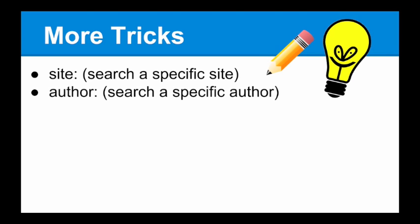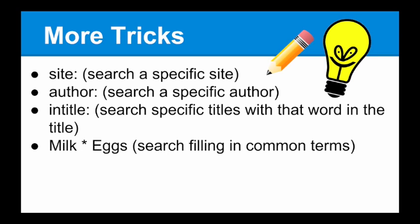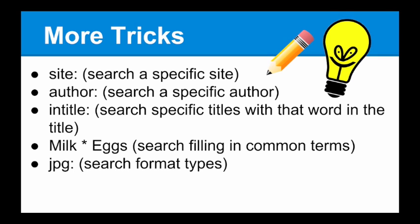A few more tricks: 'site:' searches within a specific website. 'author:' lets you search for a specific author — for example, putting 'author:John Green' finds content written by him. 'intitle:' finds documents with a specific word in the title. The asterisk can mean a wildcard between two things, or find common related terms before a word. You can also search for specific file formats: JPEG and PNG are images, PDF and DOC are documents, GIF is a moving image, and PPT is a PowerPoint. These are all very helpful when researching.